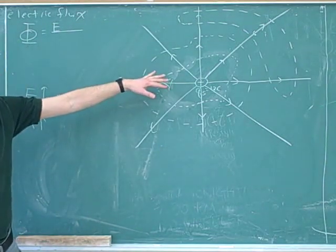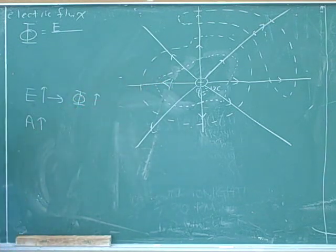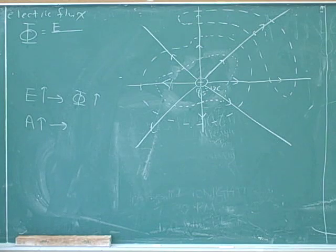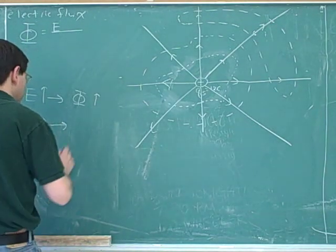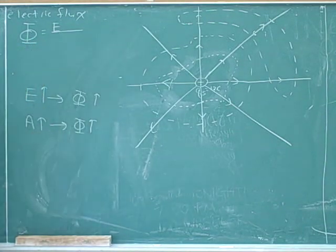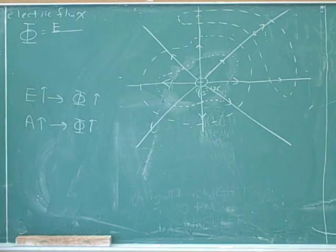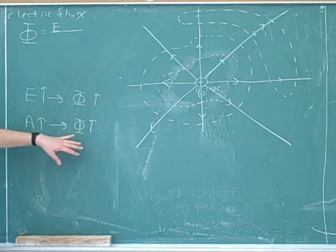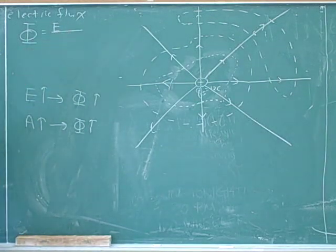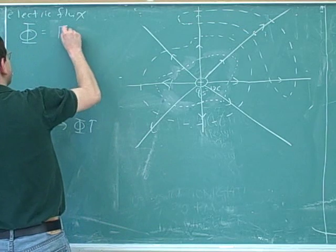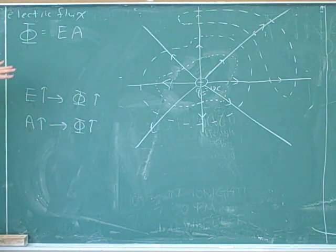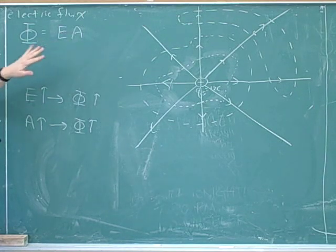This is a closed surface, even though I can only draw a two-dimensional cross-section — these really represent three-dimensional surfaces. If the surface area increases, that also tends to increase the amount of electric field getting out, because there's just more space. There should be a positive relationship between area and phi. Both E and area have a direct relationship on phi — there's nothing in the denominator. They're both directly proportional: if you double E, you double phi; if you double the area, you double phi.